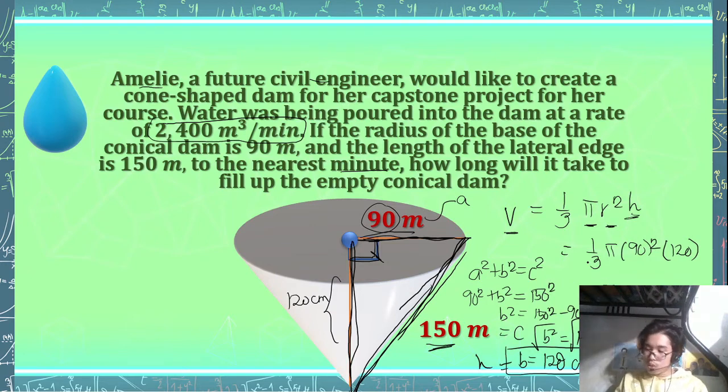And then what's 8,100 times 120? So that's 972,000 divided by 3, and then multiplied by π. And what's 972,000 divided by 3? It should give us 324,000. So 324,000 π. Therefore, this is the entire volume of our tank, 324,000 π cubic meters.